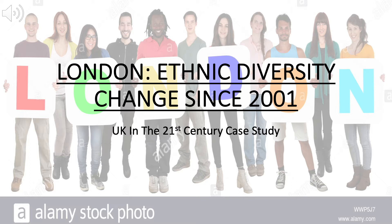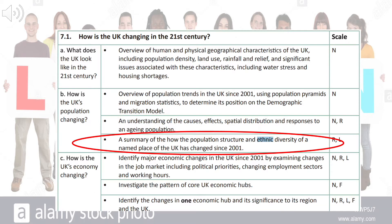Hello and welcome to our case study video on London ethnic diversity change since 2001. This is part of our unit on the UK in the 21st century, and we need to take a look at how ethnic diversity has changed in one place in the UK. As outlined in our exam structure, we need to look at a summary of how the population structure and ethnic diversity of a named place in the UK has changed since 2001. So let's get going.